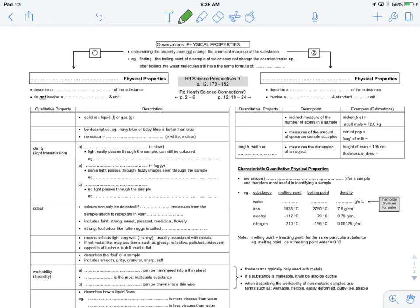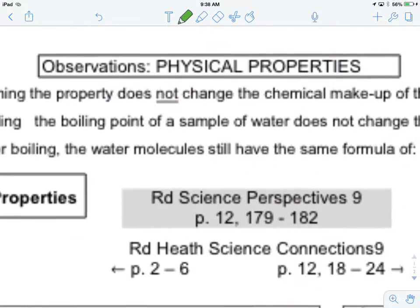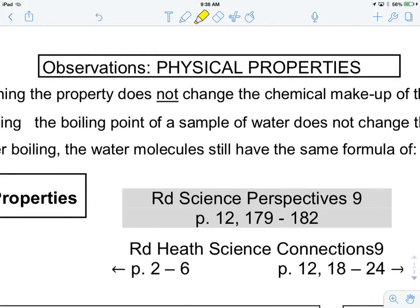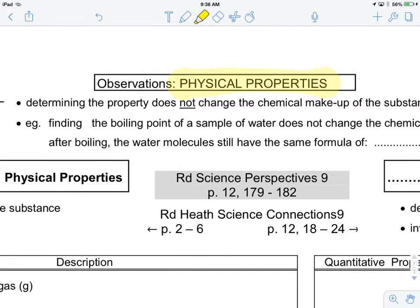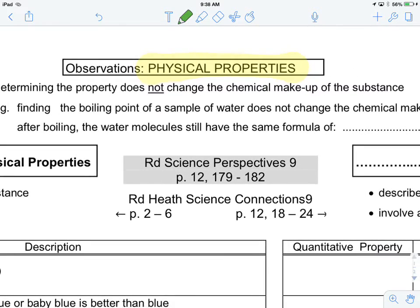Alright, here we are with a lesson all about physical properties. Physical properties are different than chemical properties because when we determine these types of properties about substances, we do not change the chemical makeup of the substance.